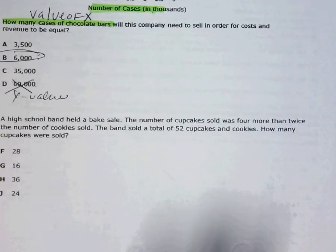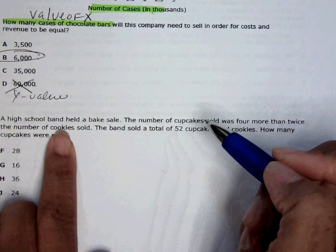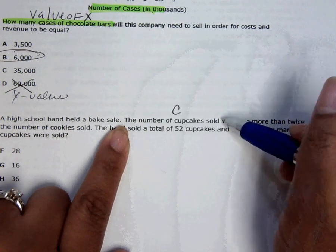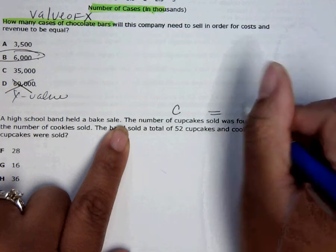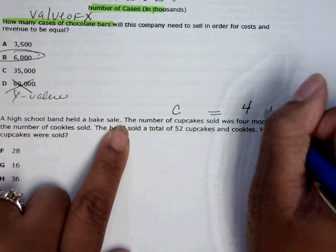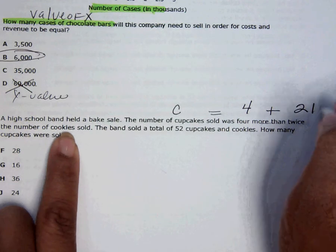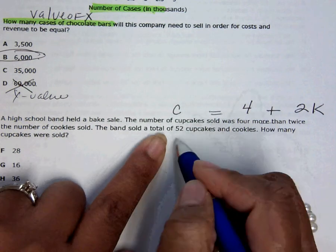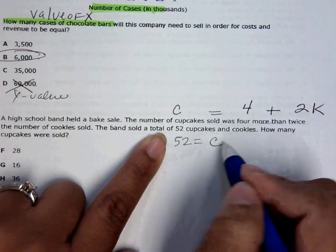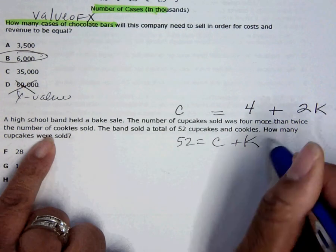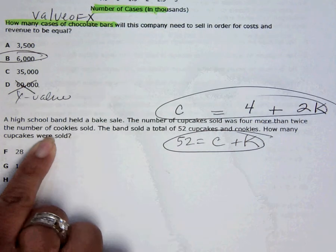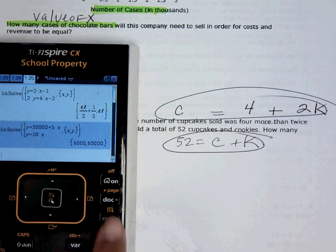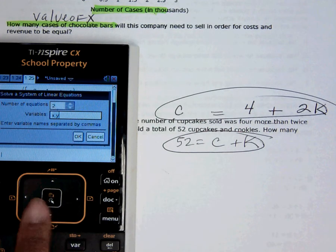Next word problem. The high school band held a bake sale. The number of cupcakes sold was four more than twice the number of cookies when we use K. So the band sold a total of 52 cupcakes and cookies. How many cupcakes were sold? You're ready for menu 3, 2 now because you have two equations. Now I haven't shown you how to use menu 3, 2 and changing the letters. So let me show you that.